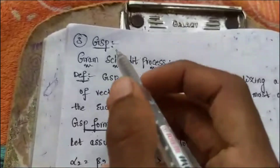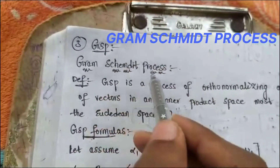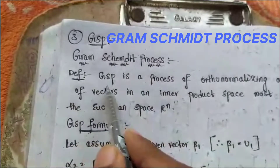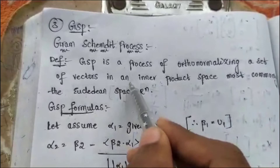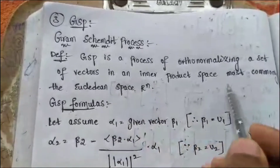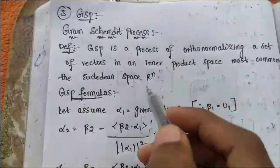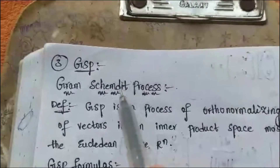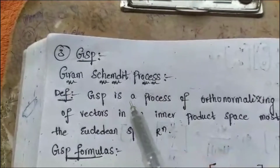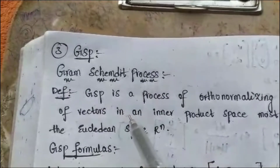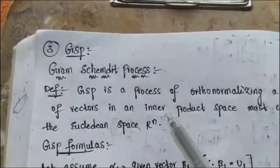In this video we will discuss the GSP — GSP means the Gram-Schmidt process. The definition of GSP is: a process of orthonormalizing a set of vectors in an inner product space, most commonly the Euclidean space R^n. The main definition of the Gram-Schmidt process is that orthogonal vectors are converted into an orthonormalized set of vectors.